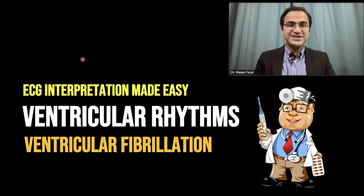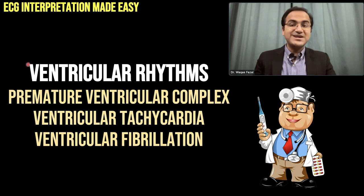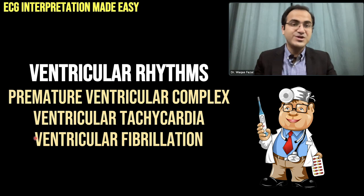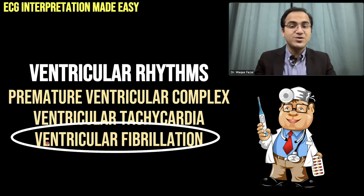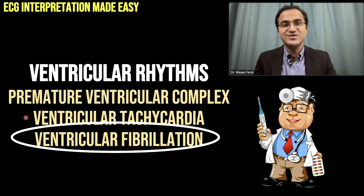In our video series of ECG interpretation made easy, in this video we are going to talk about a very high yield ventricular rhythm called ventricular fibrillation. Ventricular rhythms are divided into premature ventricular complexes, ventricular tachycardia, and ventricular fibrillation. I have already made videos on premature ventricular complexes and ventricular tachycardia — the links are given in the description below.